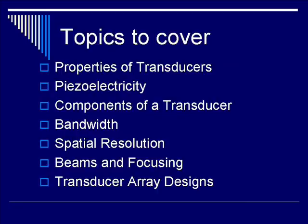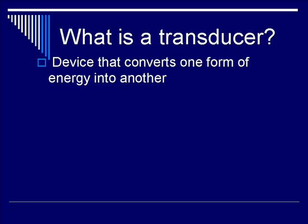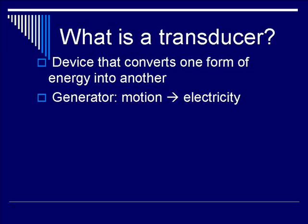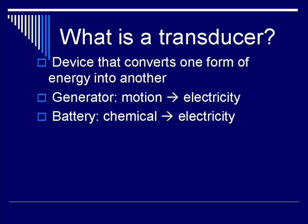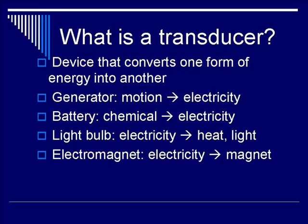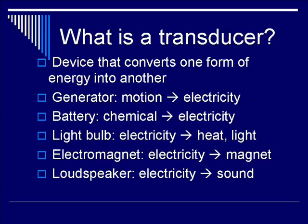What is a transducer? A transducer is a device that converts one form of energy into another. Examples include a generator, which converts motion to electricity; a battery, which converts chemical energy into electricity; a light bulb, which converts electricity to heat and light; an electromagnet, which converts electricity to a magnetic field; and a loudspeaker, which converts electricity to sound — very close to what we deal with in ultrasound.